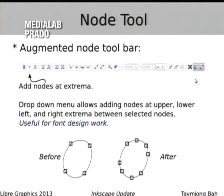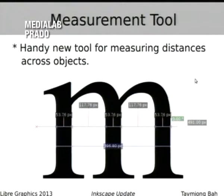The node tool has received a few changes. There's something that allows you to put nodes at the extrema, which is useful for designing fonts. There's also a new measurement tool, motivated by people using Inkscape for font design — it now measures across objects, so you can make sure all your stems have the right thicknesses.